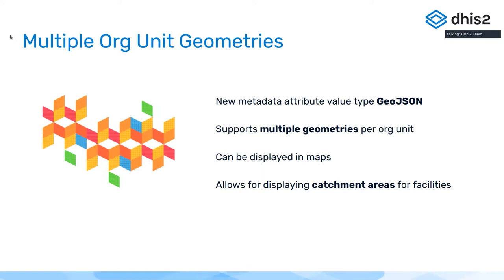GeoJSON is essentially a format for geospatial data based on JSON that allows you to store things like polygons, points, line strings, and all those geospatial data types. The standard metadata attribute system in DHIS2 can now be used for GeoJSON and geospatial data, which allows us to support multiple geometries per orgunit.